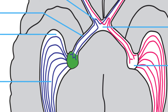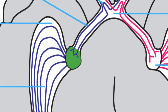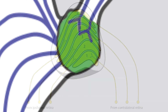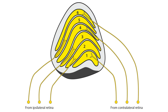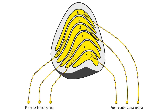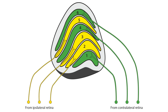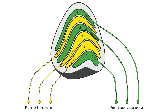The optic tract axons terminate in the lateral geniculate bodies, also called the lateral geniculate nuclei. These nuclei lie within the posterior lateral portion of the thalamus. At that way station, axons originating from the two eyes are still segregated: axons from the ipsilateral eye end up in layers 2, 3, and 5, while axons from the contralateral eye end up in layers 1, 4, and 6.